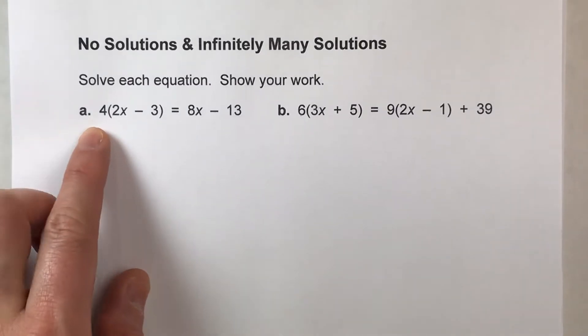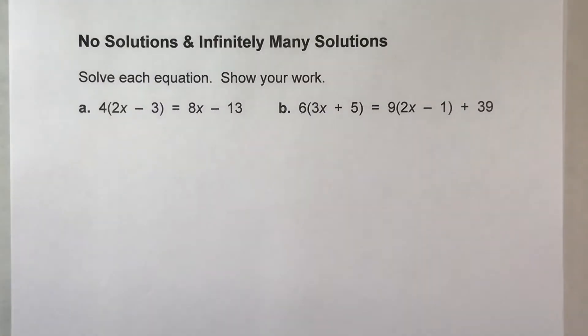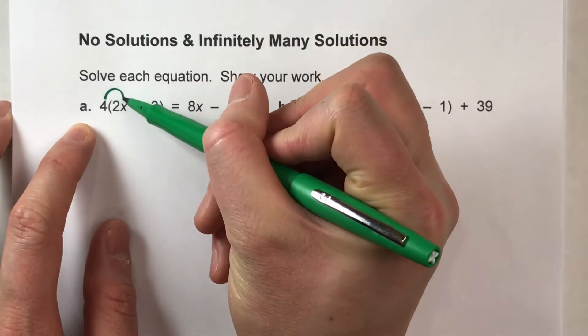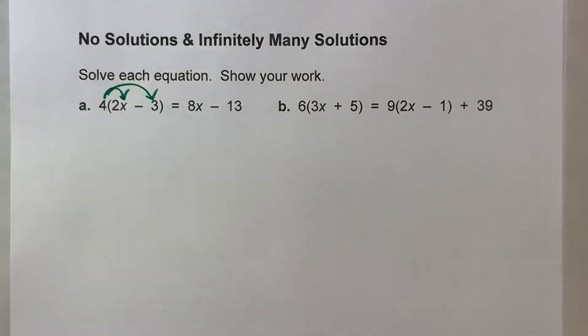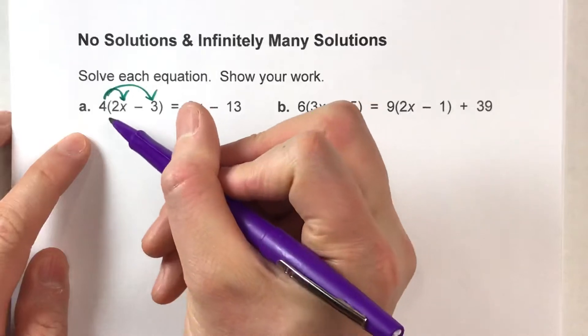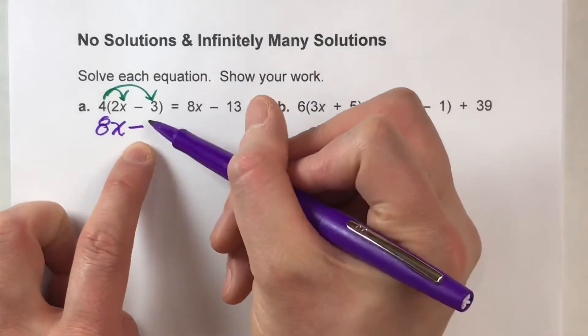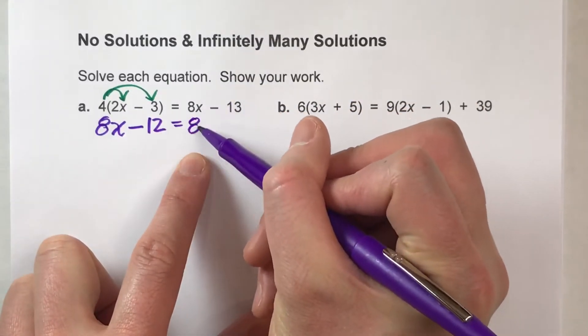It says 4 times 2x minus 3 in parentheses equals 8x minus 13. So we've got parentheses here. I'm going to use the distributive property and multiply that 4 times everything in there. So 4 times 2x gives me 8x minus 4 times 3, which is 12. And then I'm just going to drop down everything on the other side.